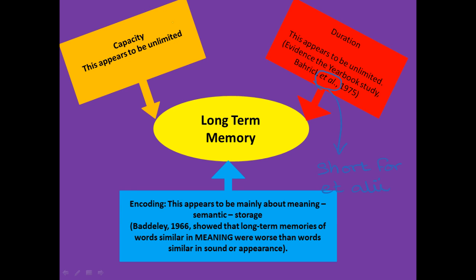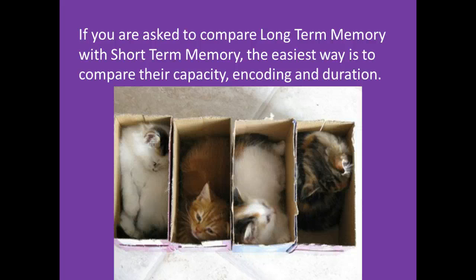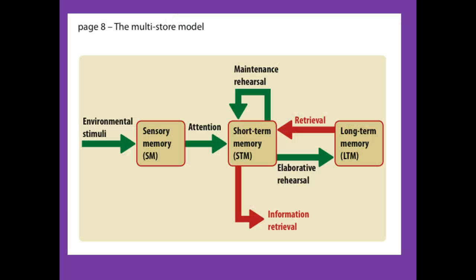By the way, 'et al.' is short for 'et alii' — it's Latin and means 'and everyone else.' So Bahrick et al. means Bahrick and everyone else who wrote the paper. Because it's Latin we put it in italics, and because it's an abbreviation we put a full stop after it. If you're asked to compare short-term memory and long-term memory across those three characteristics, that would be worth about six marks. If it's a bigger essay you can include the research evidence as elaboration.